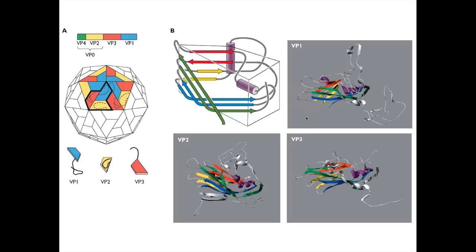Let's look again at the capsid. The icosahedral capsid is made up of those four polypeptides - VP1, VP2, and VP3 in blue, yellow, and red. The three of those plus VP4, which is on the interior, form a protomer. That's repeated five times to form a pentamer, and then the pentamer is repeated 12 times to make the virion. Each of the capsid proteins VP1, VP2, and VP3 have a very similar structure - an eight-stranded anti-parallel beta-barrel. This structure is commonly found in many virus structures, not just picornas. These form a wedge that packs together to form the virion.